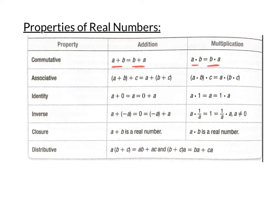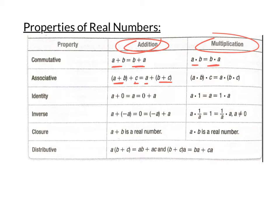However, the commutative property does not work for subtraction or division. That's why all these properties are only labeled under addition and multiplication. Another property of order is the associative property — if we want to add or multiply three numbers, we can add the first two and then the third, or add the last two and then the first, and either way we end up with the same result. If we have a bunch of numbers to add, we can add them in any order.